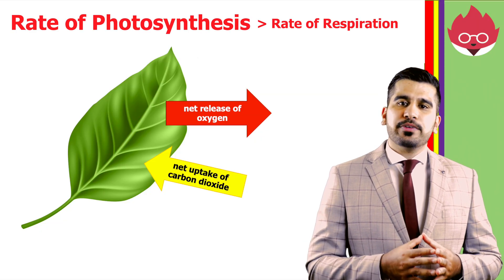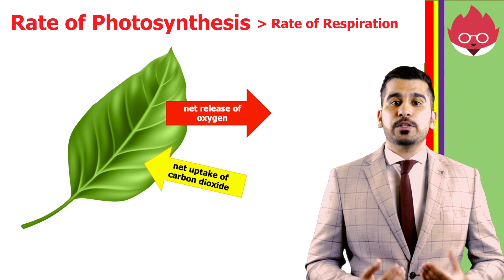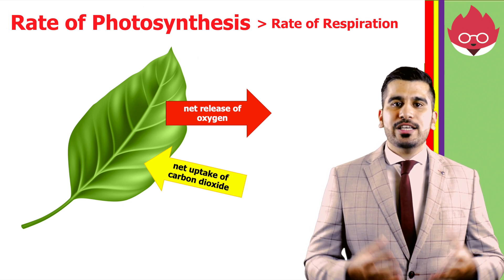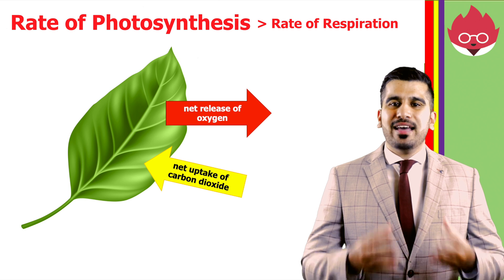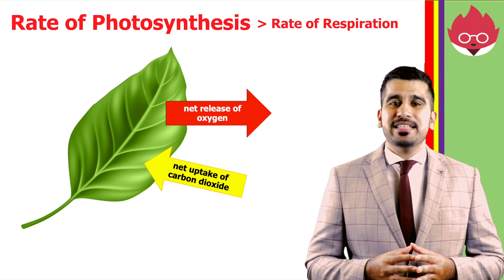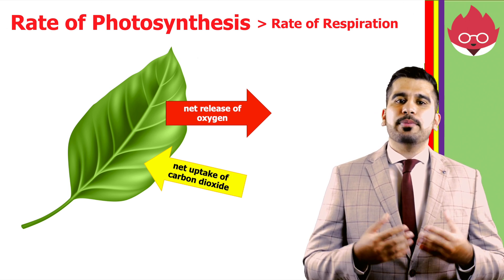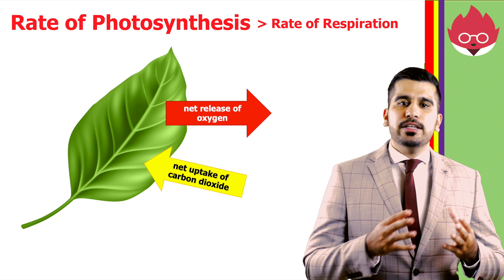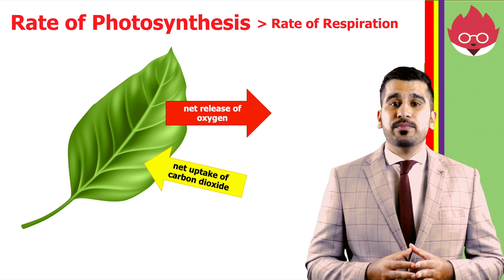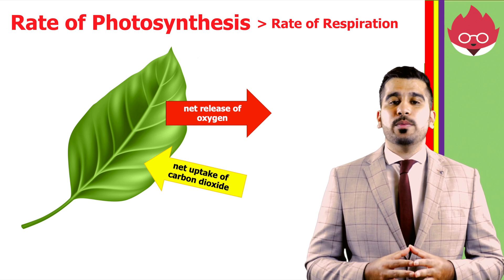During the day, respiration takes place all the time, so oxygen will be taken in by respiring cells, and carbon dioxide will be produced as a waste product. In the daytime, light is present which allows photosynthesis to occur, so carbon dioxide will be taken in by photosynthesising cells in plants, and oxygen will be produced as a waste product. Usually during the day, the rate of photosynthesis is higher than the rate of respiration, so more oxygen will be released and more carbon dioxide will be taken up.